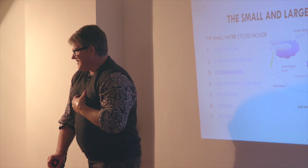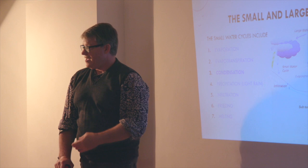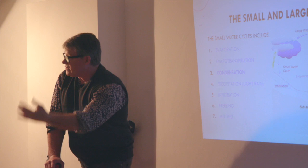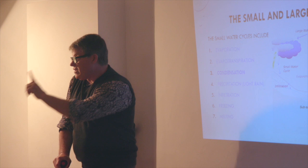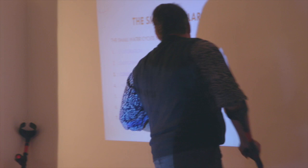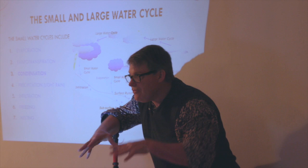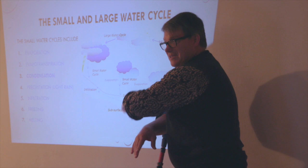Precipitation - the small rain. That's the heifer because it allows the cycle to function. Infiltration is really, really important. We have the small cycle going onto the ground and sinking in the ground and under the ground. I'll show you a picture later how important that is.